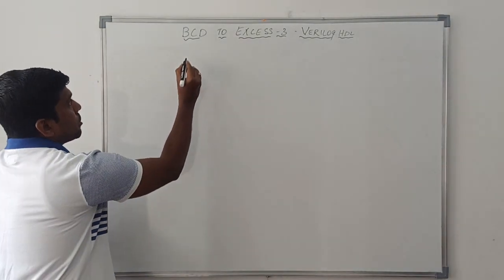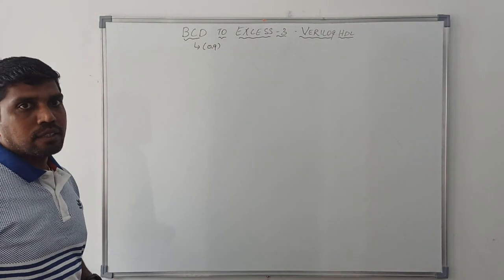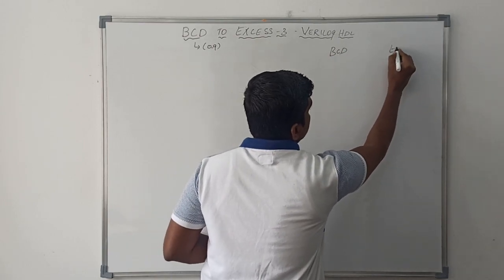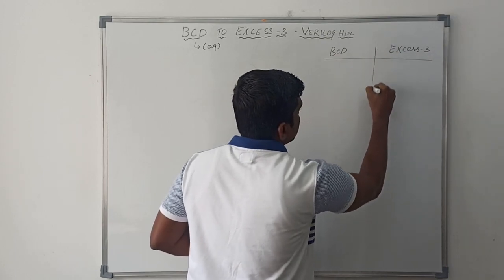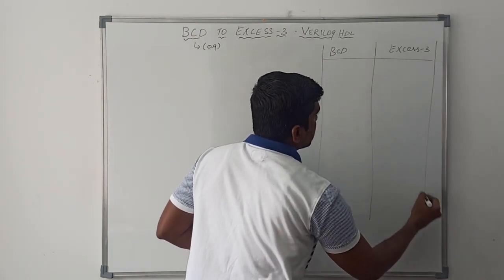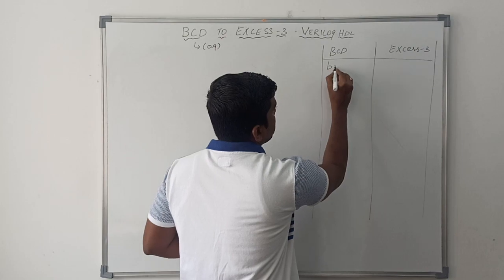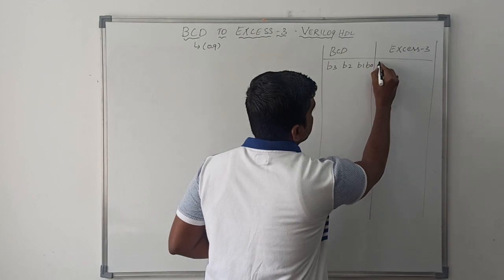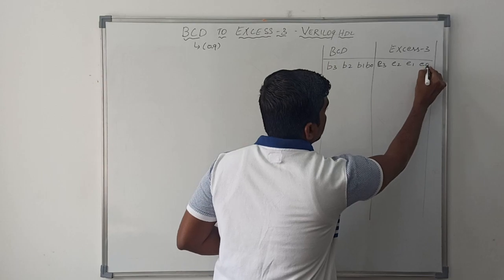Here the range of BCD is 0 to 9. This BCD number is a 4-bit number that represents B3, B2, B1, B0. And XS3 represents E3, E2, E1, E0.